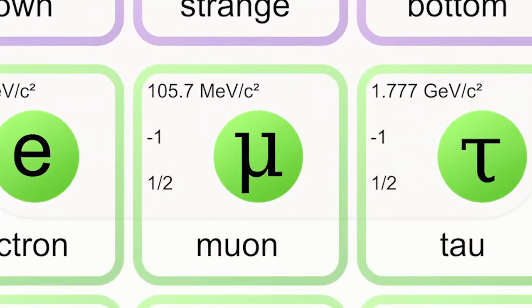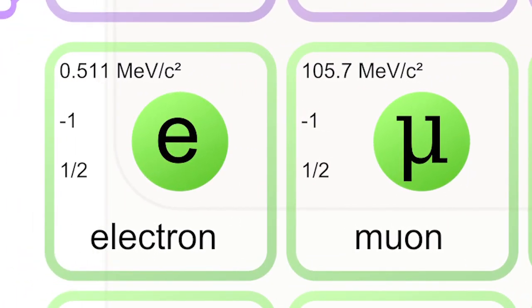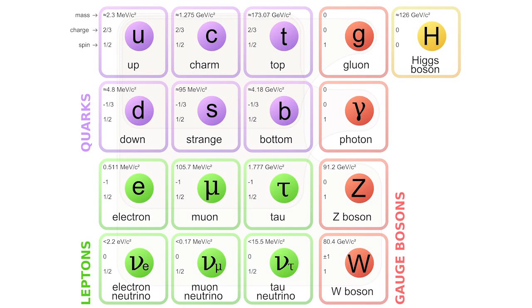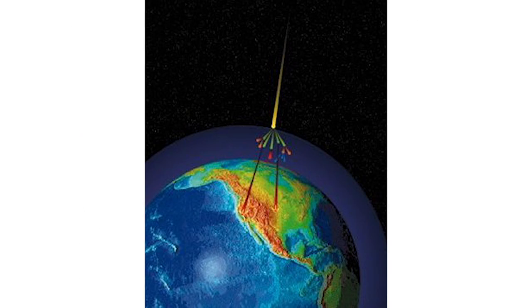So today we will see how muons prove time dilation and Lorentz length contraction. Muons are elementary particles having some similarity to an electron. They are created in collisions of cosmic rays in the upper atmosphere.